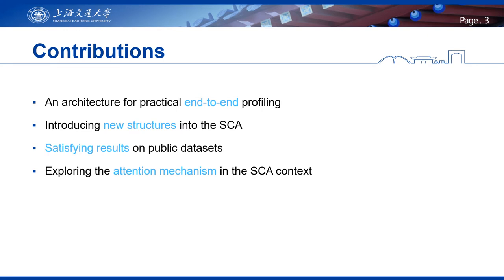We have four main contributions in this work. The first is an architecture for practical end-to-end profiling, so we could directly profile raw traces. The second is that to build the end-to-end architecture, we introduce some new structures into the SCA field. Third, we get satisfying results on public datasets with our architecture. And fourth, we explore the attention mechanism in the SCA context, which further explains why our end-to-end architecture works.